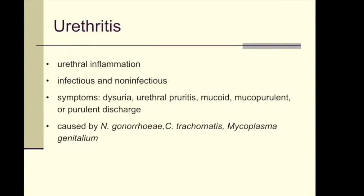Let's discuss the individual syndromes, starting with urethritis and cervicitis. 'Itis' means inflammation, so urethritis is inflammation of the urethra. Common symptoms are dysuria — pain on urination — pruritus, and the more commonly seen in the clinic: mucoid, mucopurulent, or purulent discharge. Gonococcal or non-gonococcal urethritis is easily diagnosed based on clinical manifestation, so the reliability of the clinical diagnosis is very high.